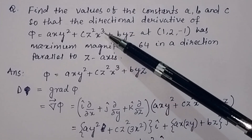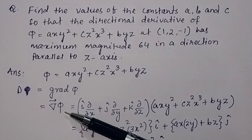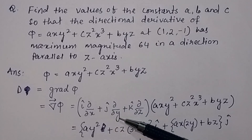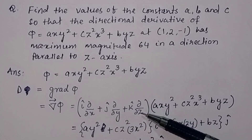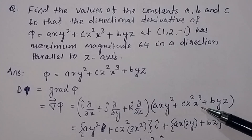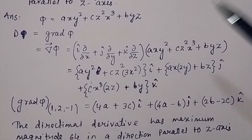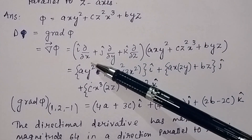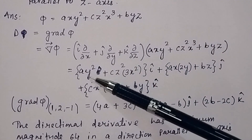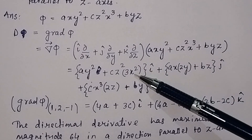The gradient of the scalar function gives the maximum value of the directional derivative. The del operator is given by i-cap ∂/∂x + j-cap ∂/∂y + k-cap ∂/∂z. Now let us find the partial derivative of phi with respect to x. For the first term, it equals ay². For the second term, cz² times the derivative of x³ equals 3x².